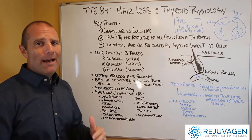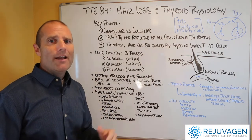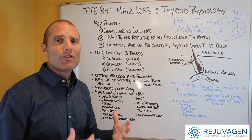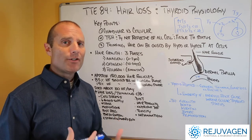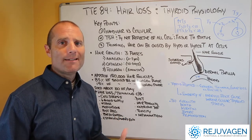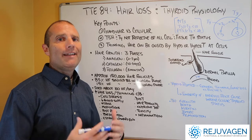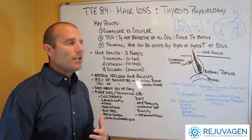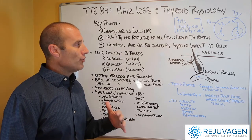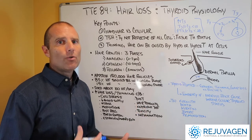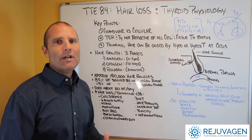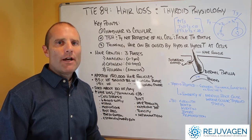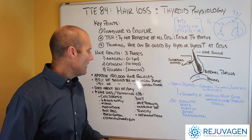You shed about 100 hair follicles per day if you have normal physiology, so some hair loss on a regular basis is not unusual. But if it becomes excessive, you typically have either too much or too little thyroid hormone reaching that cell. The most common thing we see is too little thyroid hormone reaching the cell.